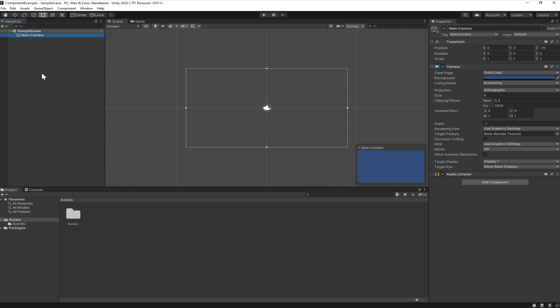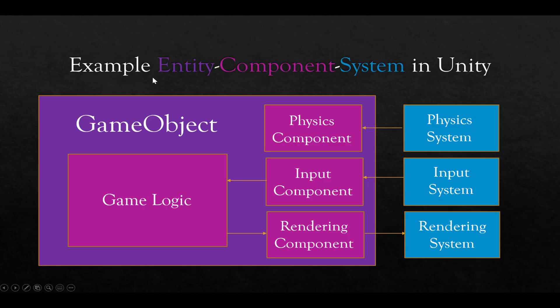So let's go back to the example. We see here, again, entity, component, system, and unity of entities, game objects, made of components, in this example, physics, input, and rendering, and each system, physics, input, and rendering, only communicating with the corresponding components within a game object, which are the entities within Unity.